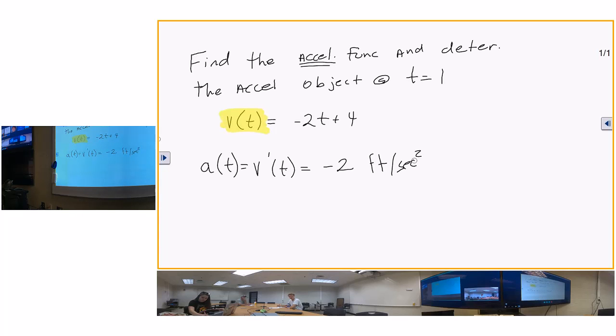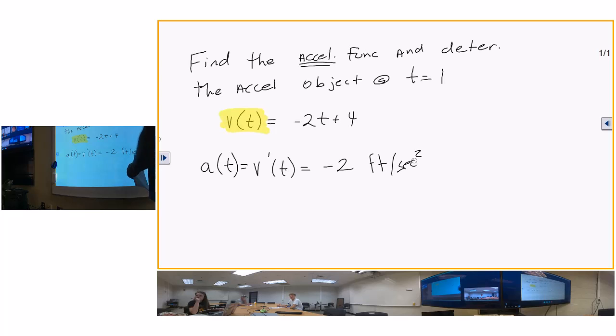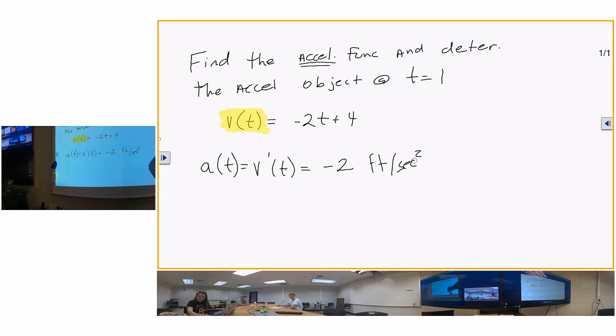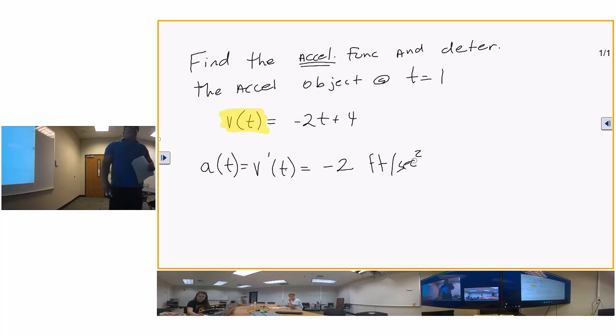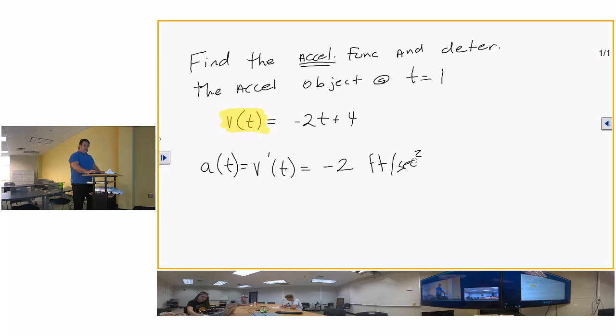Why is it seconds squared? Because you're dealing with two dimensions - you're dealing with distance and time. That's why. When you're talking about acceleration, you're talking about feet per second squared.